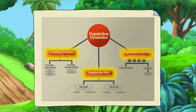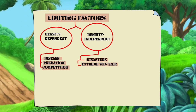In population dynamics, limiting factors is anything that constrains a population size and slows or stops it from growing. Its limiting factors include density-dependent and density-independent. In density-dependent, it causes disease, predation, and competition. While in density-independent, it causes disasters and extreme weather.